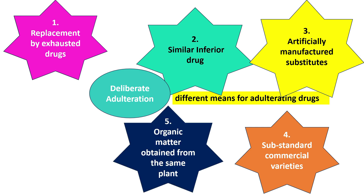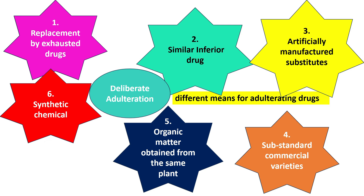Organic matter obtained from the same plant can also be added deliberately — for example, stocks of clove mixed with clove, or organic matter from the same plant. Lastly, synthetic chemicals — for example, glass pieces can be added to colophony, and beeswax can be adulterated with paraffin wax tinted yellow. These are the six points of deliberate adulteration that students should remember.